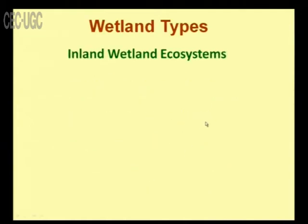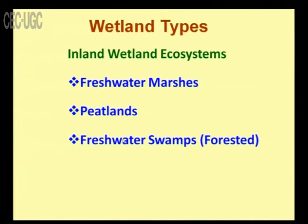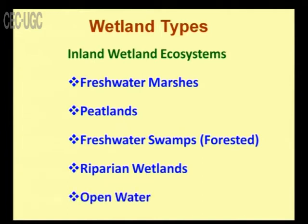Now let us see the different types of wetlands. The wetland ecosystem is differentiated into many categories. The first is the inland wetland ecosystem, which comprises freshwater marshes, peatlands, freshwater forested swamps, riparian wetlands, and open water.